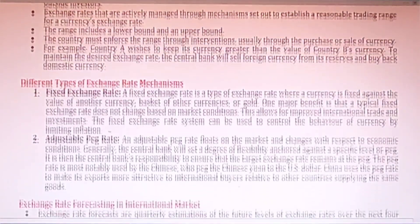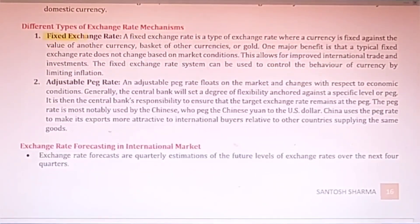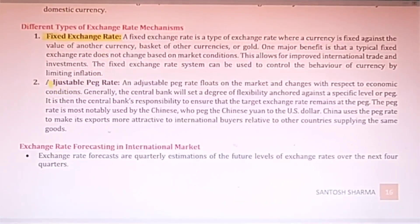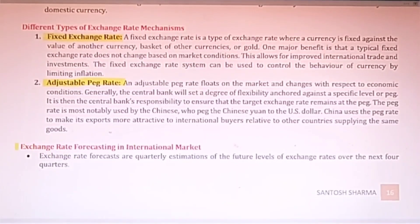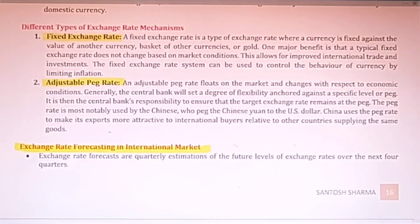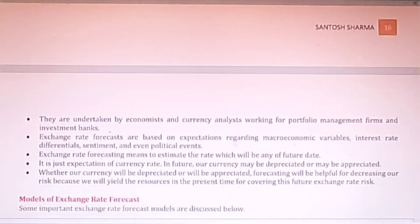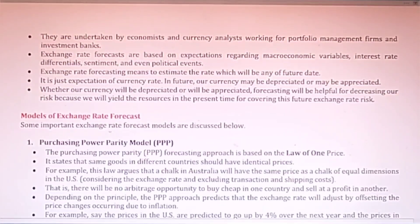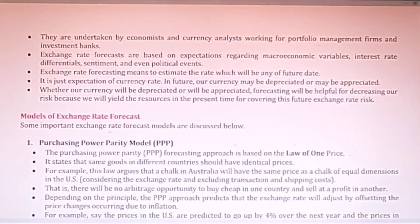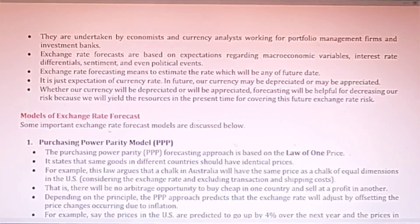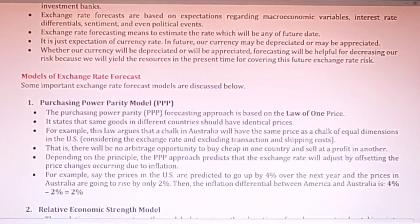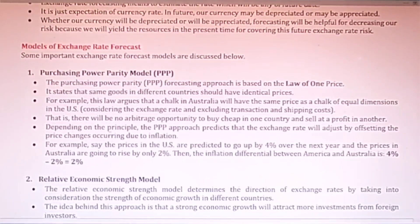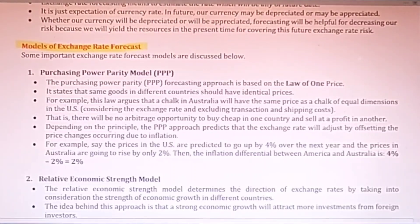The different types of exchange rate mechanisms include the fixed rate, the adjustable peg rate, and the fluctuating rate. The next topic is exchange rate forecasting in the international market — how this forecasting is done. It depends on many factors such as the political situation and the risk associated with the concerned country, as well as development, infrastructure, facilities, and investment. A few models of exchange rates are used for forecasting.